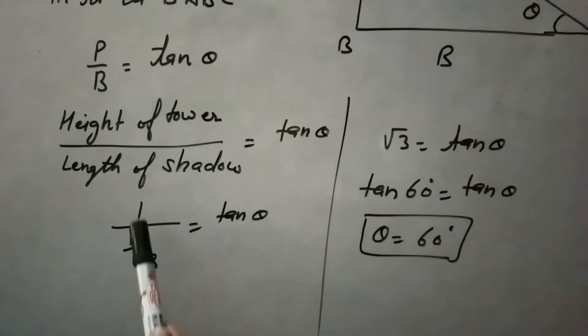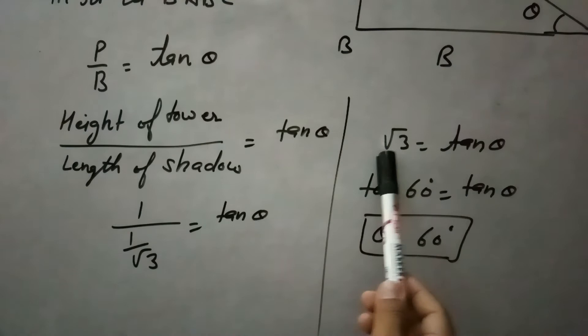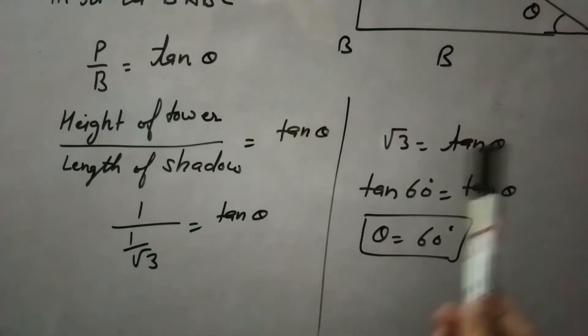Height ratio is given 1 to 1 over root 3 which equals to tan theta. This root 3 will come up. So, it will become root 3 equals to tan theta.